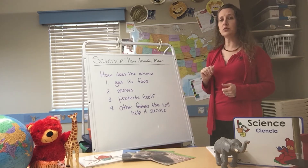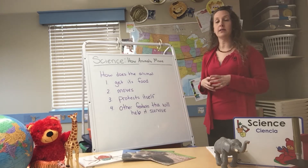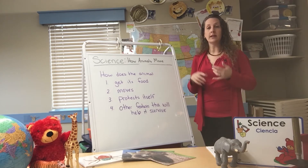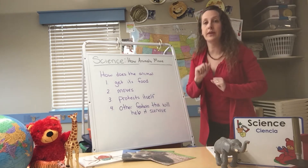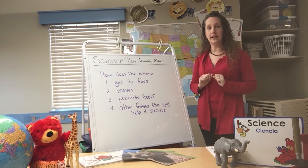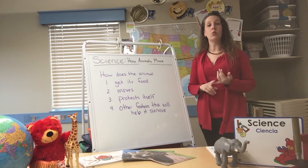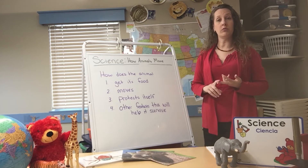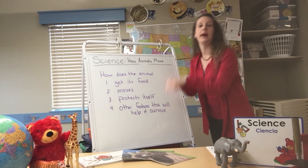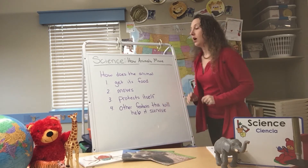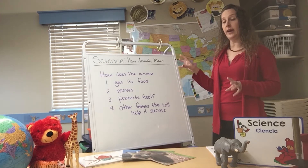How do animals move? Think about a dog or a cat — they can run, and they can slink down real low and sneak up on something. You see that with cats all the time. How about a horse? They can walk, gallop, and run, and they can rear up and come back down.